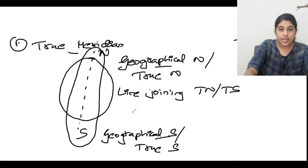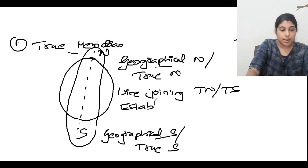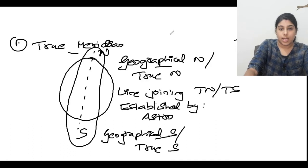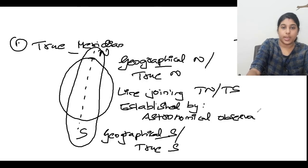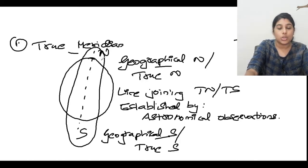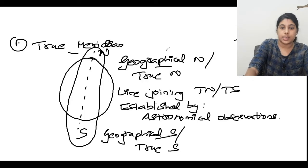True meridian is established by astronomical observations — this is a most important point, don't forget it. So to summarize: true meridian is a line joining true north and true south, or geographical north and geographical south, and it is established by astronomical observations.